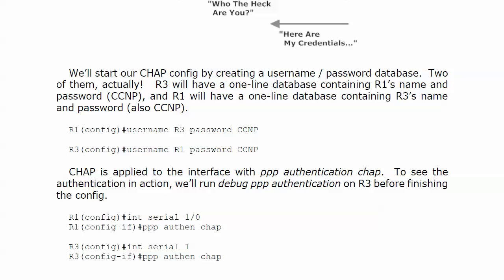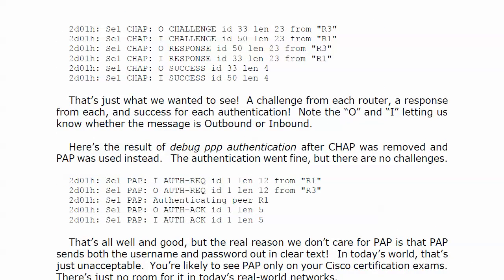I ran debug PPP authentication on router 3 before I finished this config. If you're troubleshooting PAP or CHAP, it's probably just a mistyped password — most of the time it's going to be a mistyped password, maybe an extra space. You can go blind staring at the config. But if you know these debugs, they'll give you a real hint as to where the issue is. In this case we had two challenges, two responses, and two successes. The debug shows a challenge from each router, a response from each router, and then success — with O and I indicating whether the message is outbound or inbound.